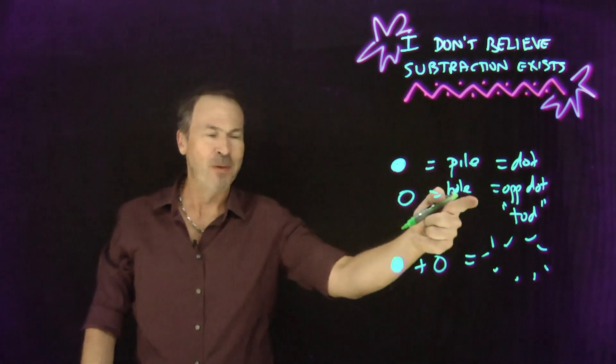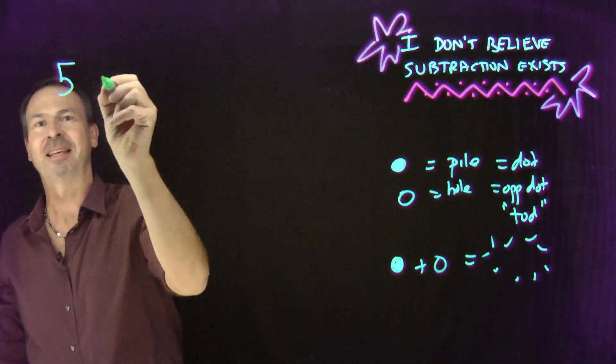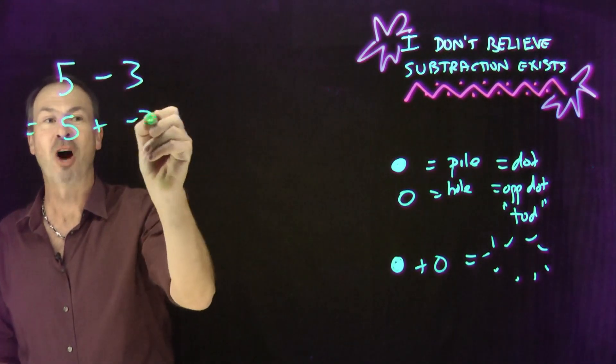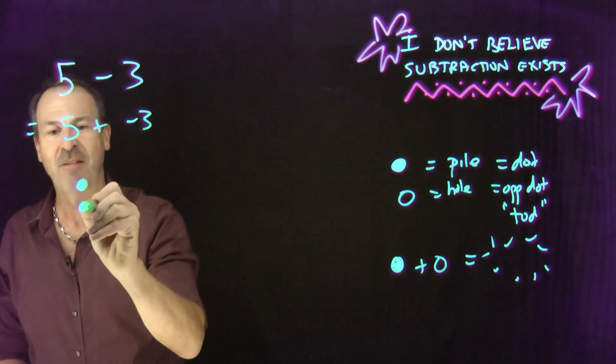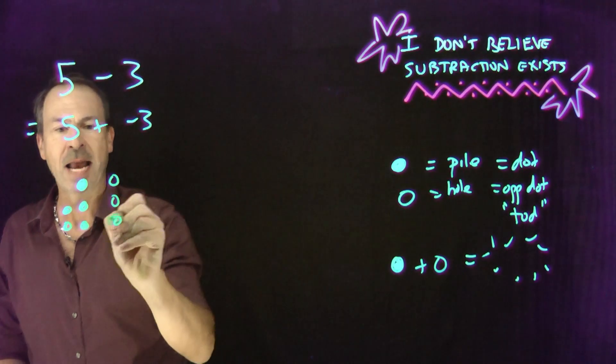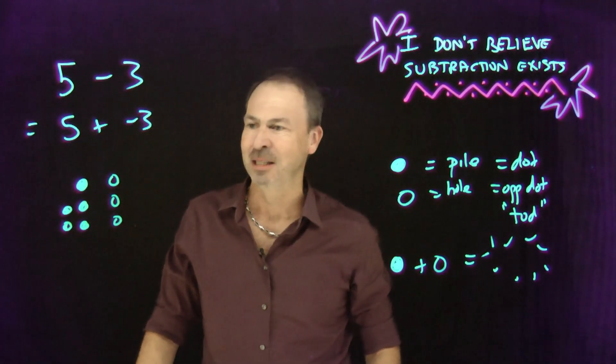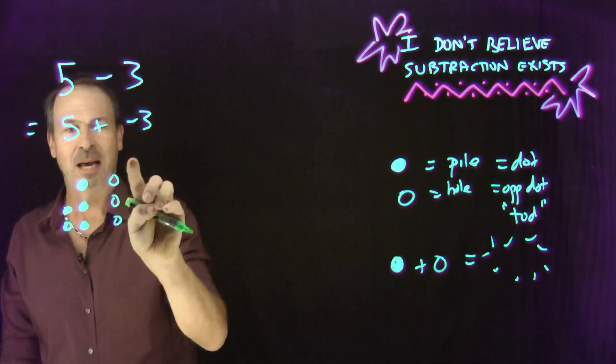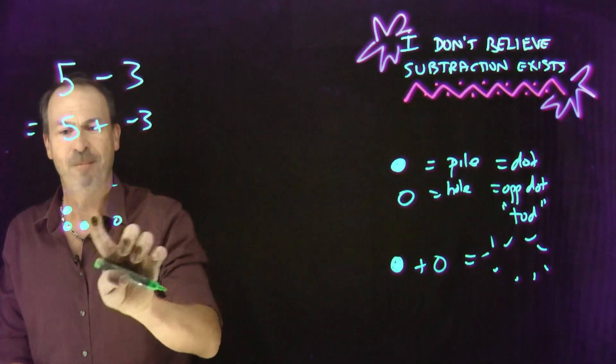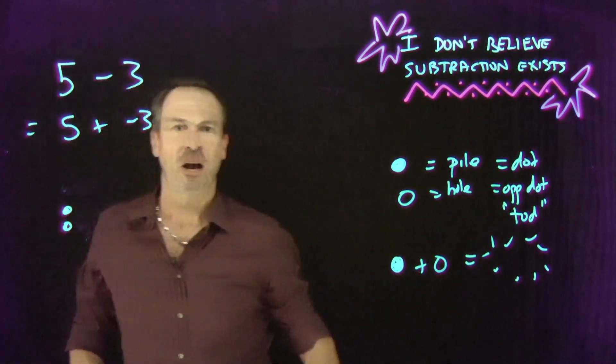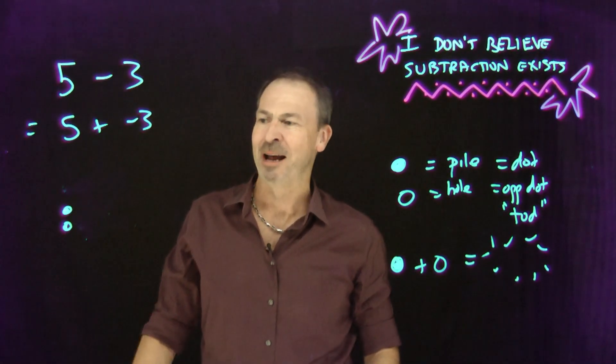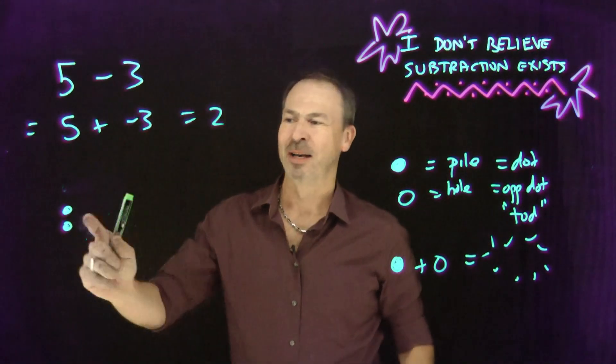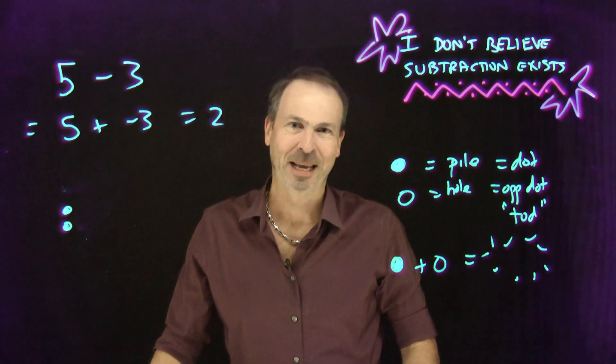So in my dots and opposite dots pictures, I can still do things like this. Five take away three. In my mind is five plus the opposite of three. It's literally five dots and three anti-dots. Three opposite dots. Three tods. And then I've got the advantage to be able to smudge on a clean board here. Poof. Poof. Poof. Each dot and anti-dot disappear. Each pile and a hole annihilate each other. And I'm left with a solid two actual dots. So I can do the same work in my dots and opposite dots picture thinking here.